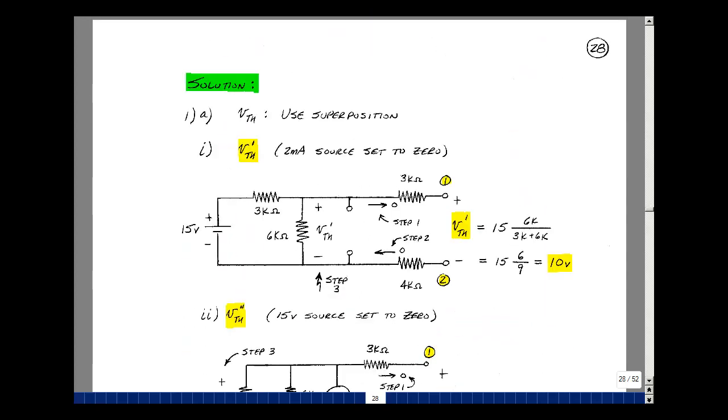Our circuit on the last page has two sources, so we could use superposition to solve for the Thevenin voltage. Let me set the current source equal to zero. So I have a voltage source, two resistors, and two more resistors. I'm going to find the voltage V Thevenin due to the first source.